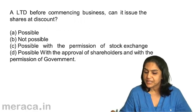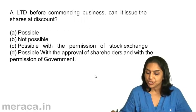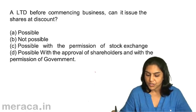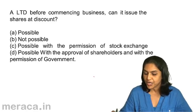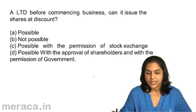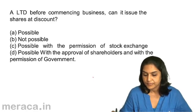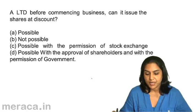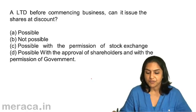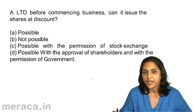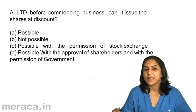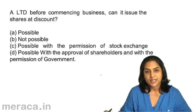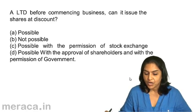A Limited, before commencing business — can it issue shares at a discount? A) Possible, B) Not possible, C) Possible with permission of the stock exchange, D) Possible with approval of shareholders and permission of government. As per the Companies Act 1956, shares can only be issued after one year of commencement of business. As per the Companies Act 2013, a company cannot issue shares at a discount at all. The correct answer is B, not possible.